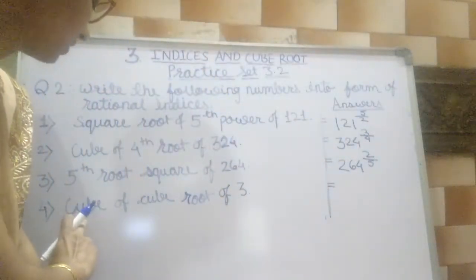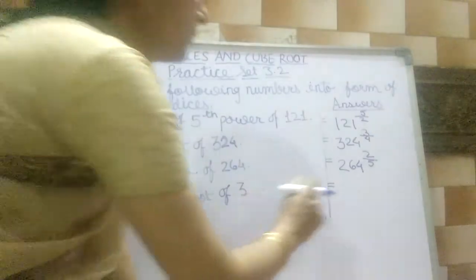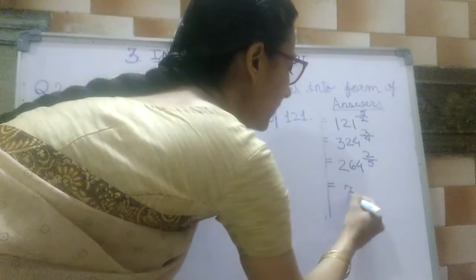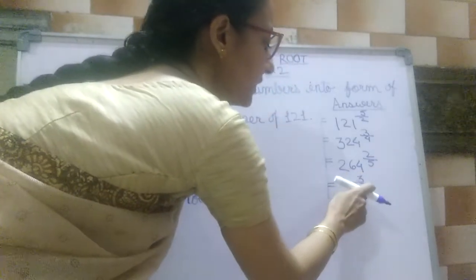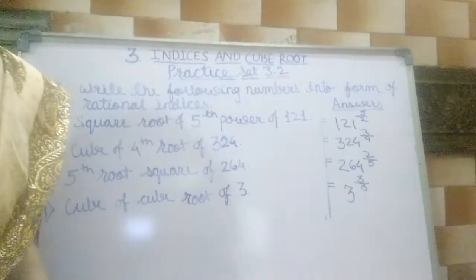Next, cube of cube root of 3. 3 is our base. Cube of cube root, so the index is 3 by 3.